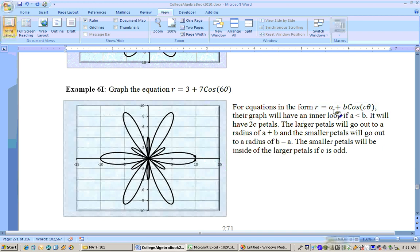For equations in this form, R equals A plus B cosine of C theta. Their graph will have an inner loop if A is less than B, like this, 3 is less than 7, so that's why they have these smaller loops. That's the smaller petals, and it will have two C petals. But what's C? Six. So how many petals does this thing have, then, since it's in that category? It will have 12 petals, six on the outside and six on the inside. But the larger petals will go out to a radius of A plus B.